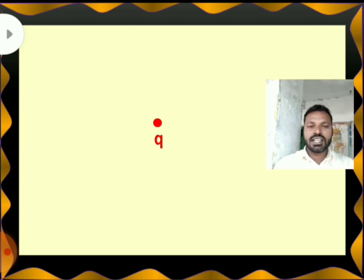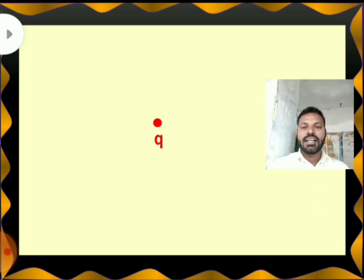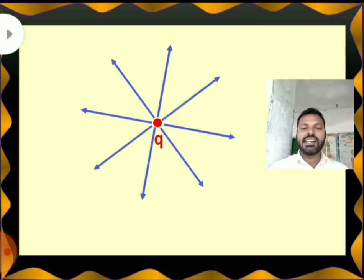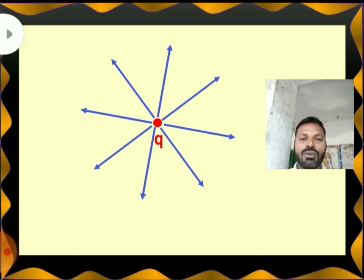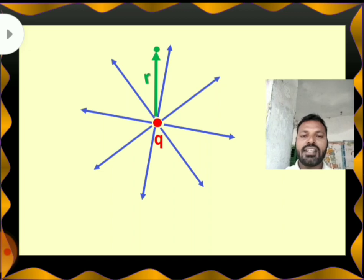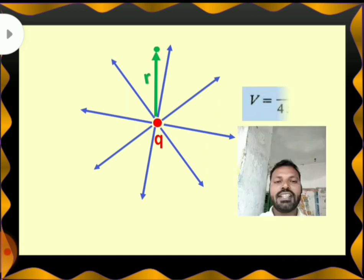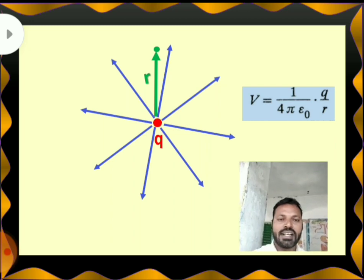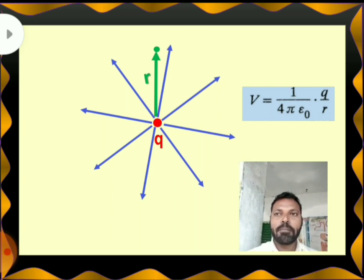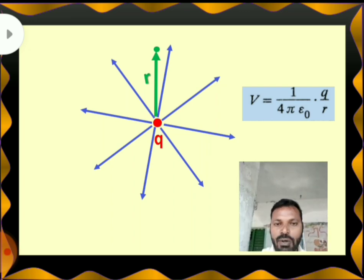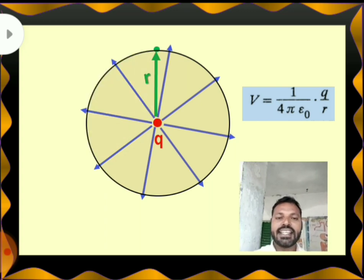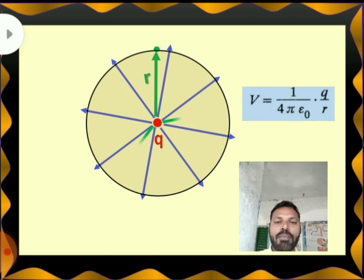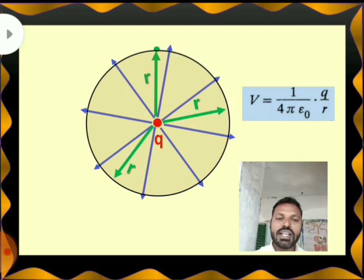Here is my point charge Q, situated at a place. If I draw electric lines of force, they are always outward from the center. The navy blue color lines are my electric lines of force. At a distance R, take a point and find out the potential: V is equal to 1 by 4 pi epsilon-naught, Q by R. This is the potential due to a point charge at a distance R. Now I am drawing a circle with radius R, taking center as Q. Every point on this circle is at equal distance from the center, so all the points have the same potential.